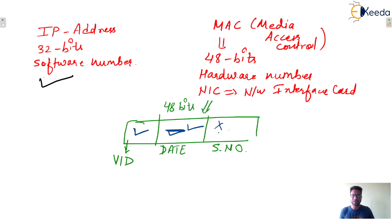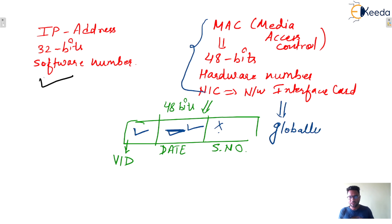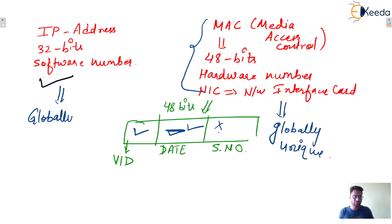So MAC address is also globally unique. Also, IP address is also globally unique. Both are globally unique.